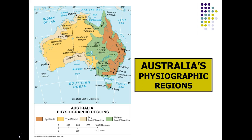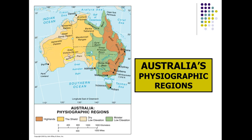Here we can see the defining physical features that make up Australia's landscape. We have a population that is highly concentrated on the East Coast as a result of the wetter conditions produced by the Great Dividing Range. On the other side of the continent, we have this great expanse of very arid and dry conditions. This is one of the oldest land masses on Earth.